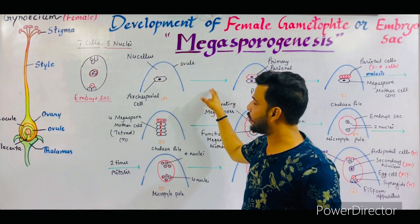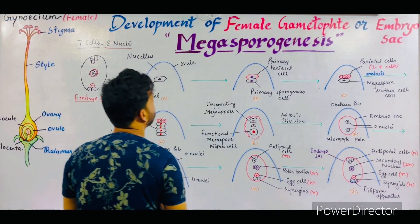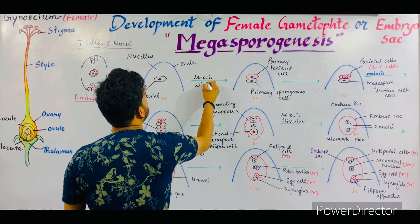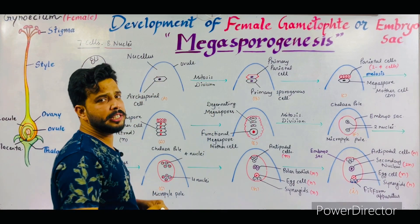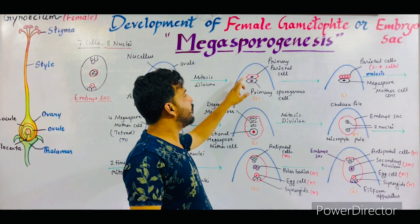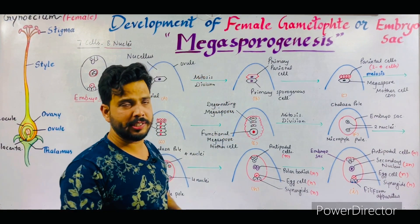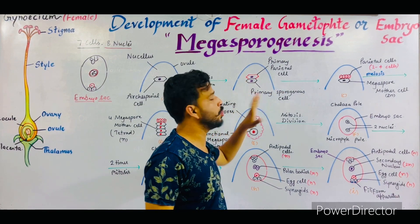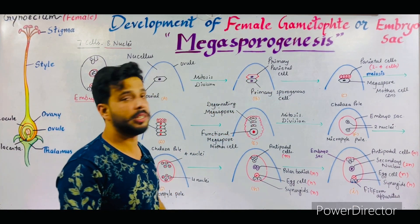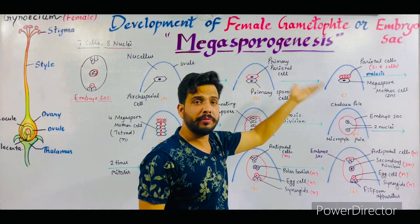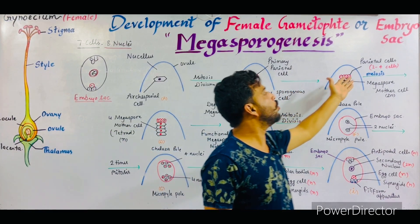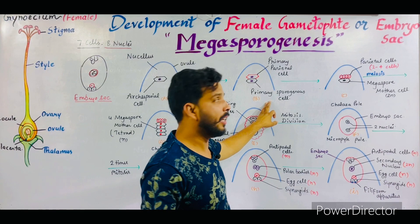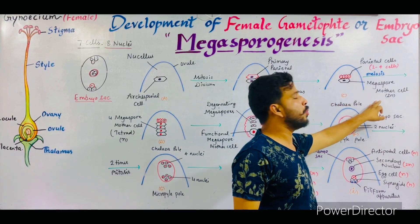This archesporial cell divides by simple mitosis division. With the help of this division, the archesporial cell divides into two cells — one cell forms towards the outside while one forms towards the inner side. The outer cell is termed as the primary parietal cell, while the inner is termed the primary sporogenous cell. The primary parietal cell further divides to form two to four cells, as shown in red, but this primary sporogenous cell does not divide and is converted into the megaspore mother cell, which is diploid in nature.